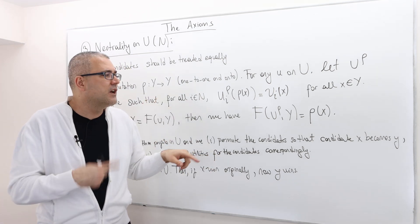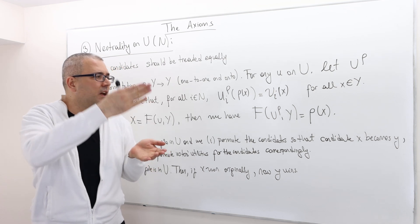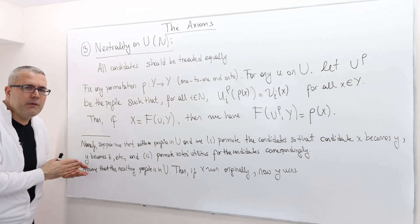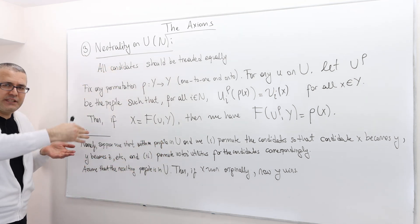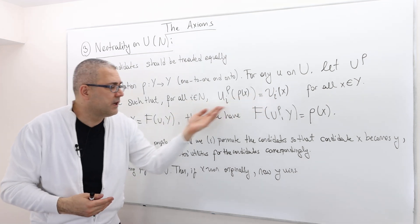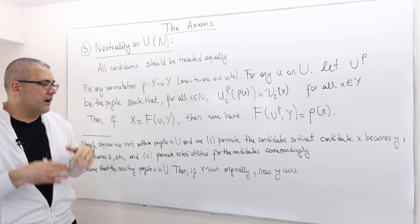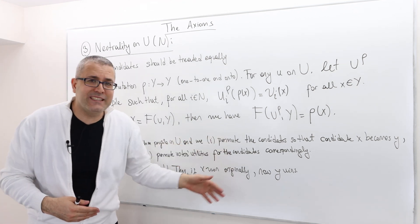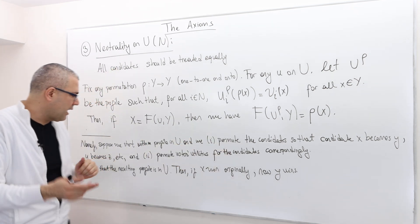suppose we start with a profile u and we permute the candidates, the alternatives, so that candidate x becomes y, y becomes z, and so on and so forth, and we permute the voters' preferences, utilities for the candidates correspondingly.